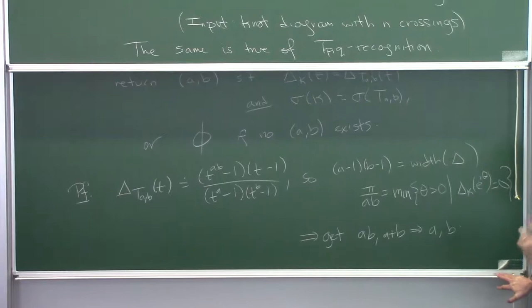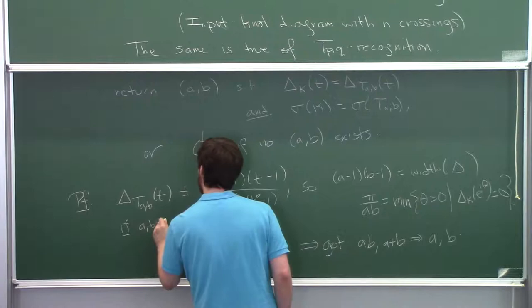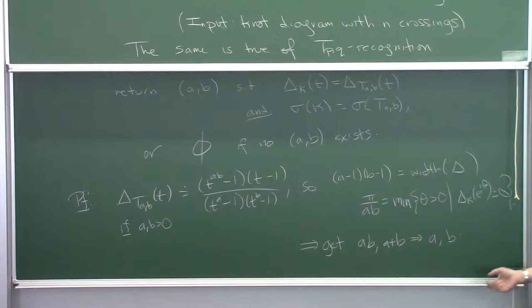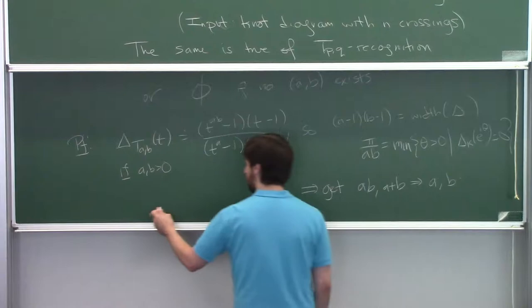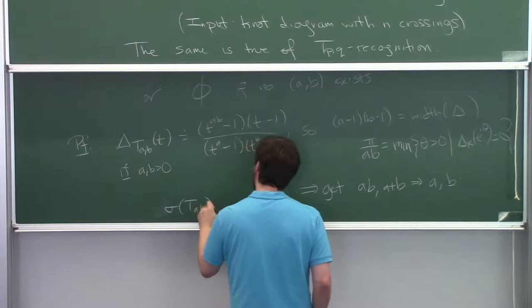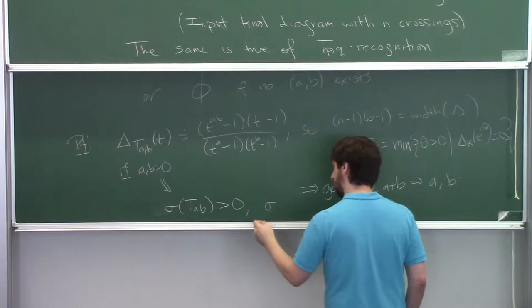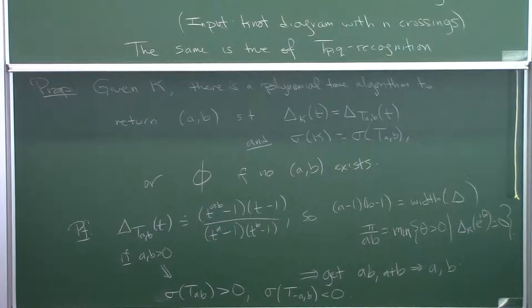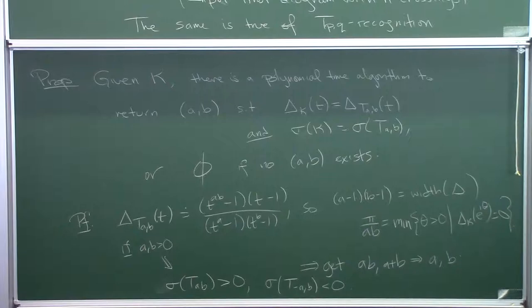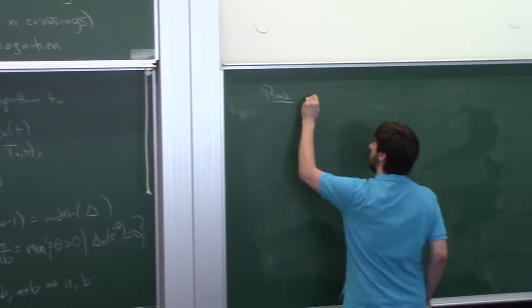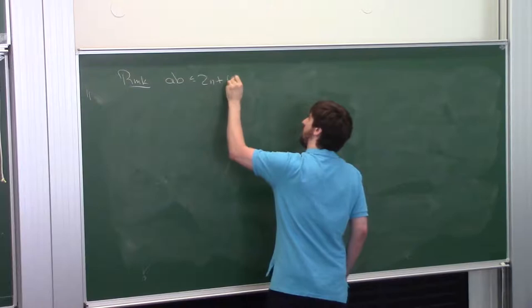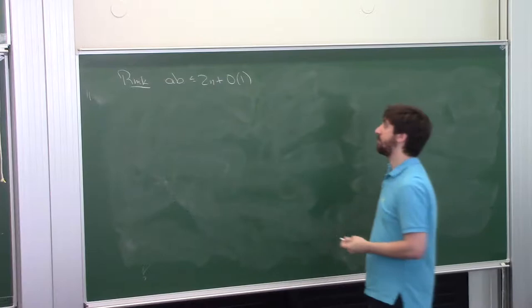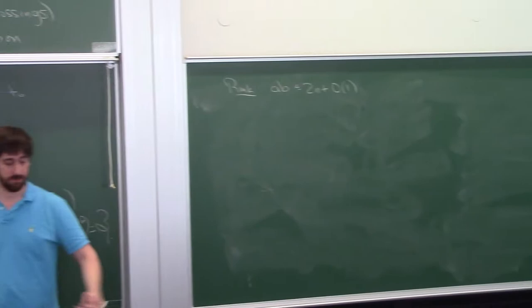This assumes A and B are both positive because the Alexander polynomial doesn't detect chirality. But once you know it has the Alexander polynomial of some positive torus knot, you check signatures: positive torus knots all have positive signatures, negative torus knots have negative signatures. So you compute the signature of the positive one and see if they agree. Also note that the degree AB is at most something like 2N plus a constant, so this is computationally not a problem — it's a general fact that the degree of the Alexander polynomial is bounded by the crossing number.